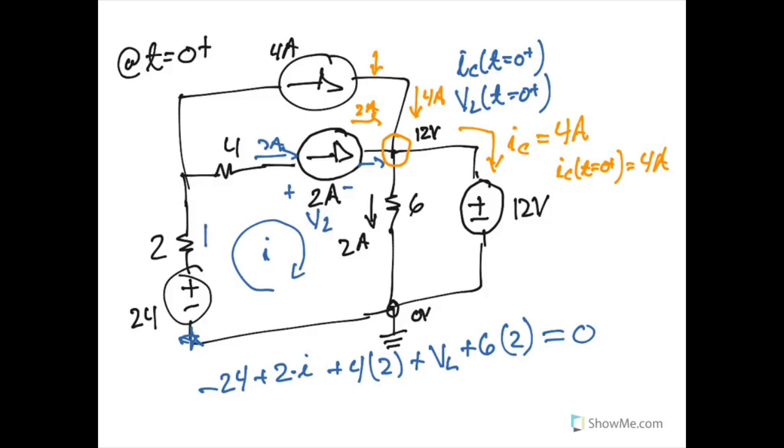Now, the only thing we're missing is what is this current right here? And thankfully for us, we have a couple current sources, and we know that four amps is going this way, and two amps is going this way. So that must mean that this current I right here is six. And so I can replace I right here with six, and we have nothing left but our unknown and a bunch of numbers. And so we can find out that the voltage across the inductor at time just greater than zero is actually negative eight volts. So we have now found all of our initial conditions for all of our components at time right before and time right after zero.